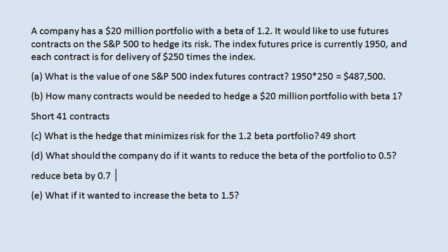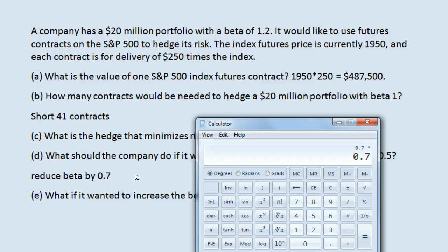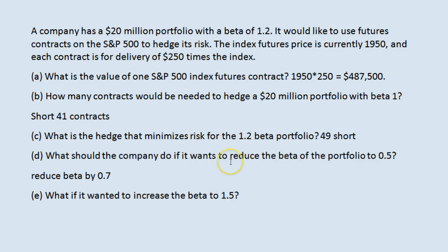We'll do that by shorting contracts again, since we're trying to reduce the beta. The only difference from the full hedge is that instead of reducing beta by the full 1.2, we only want to reduce it by 0.7. Going back to our standard beta-1 baseline of 41 contracts, if we want to reduce the beta by 0.7, we do 0.7 times 41, which equals 28.7 — rounded to 29. So shorting 29 contracts gives us a partial hedge. The full hedge was 49 short; to reduce beta by 0.7 and bring it to 0.5, we short 29 contracts.